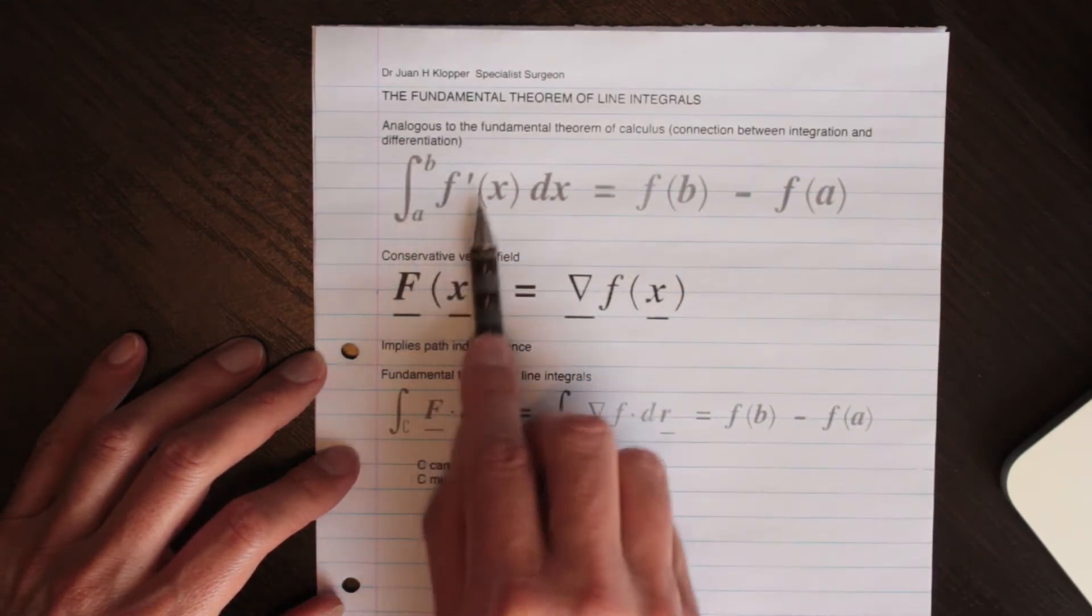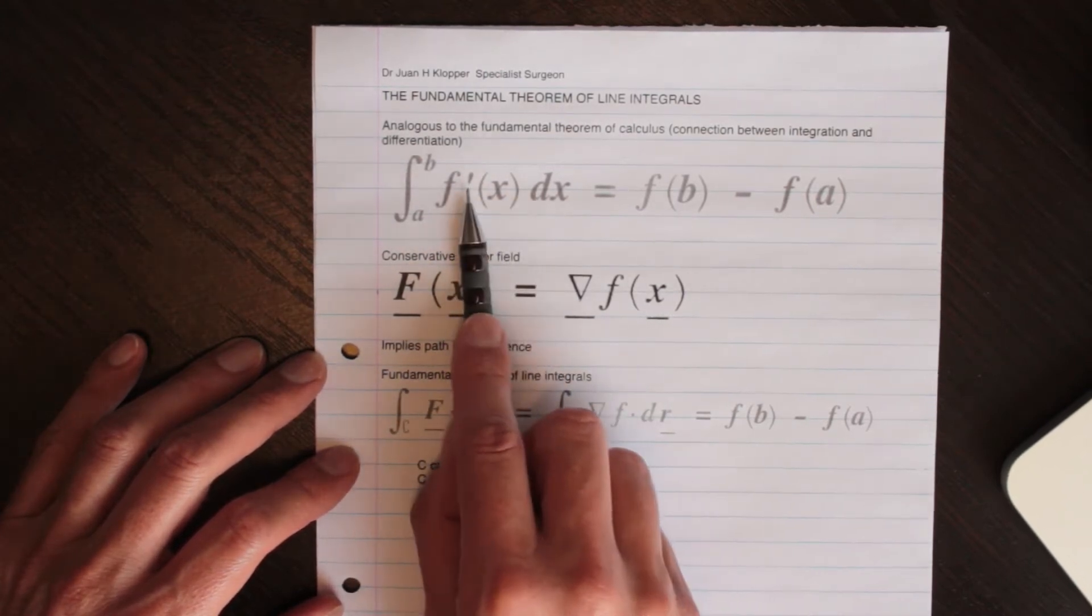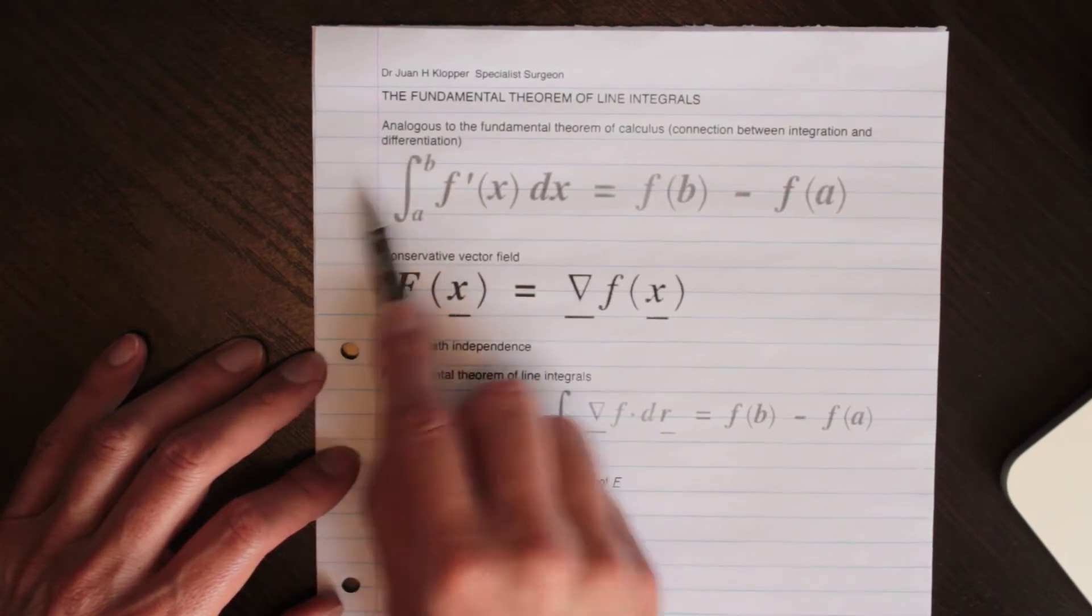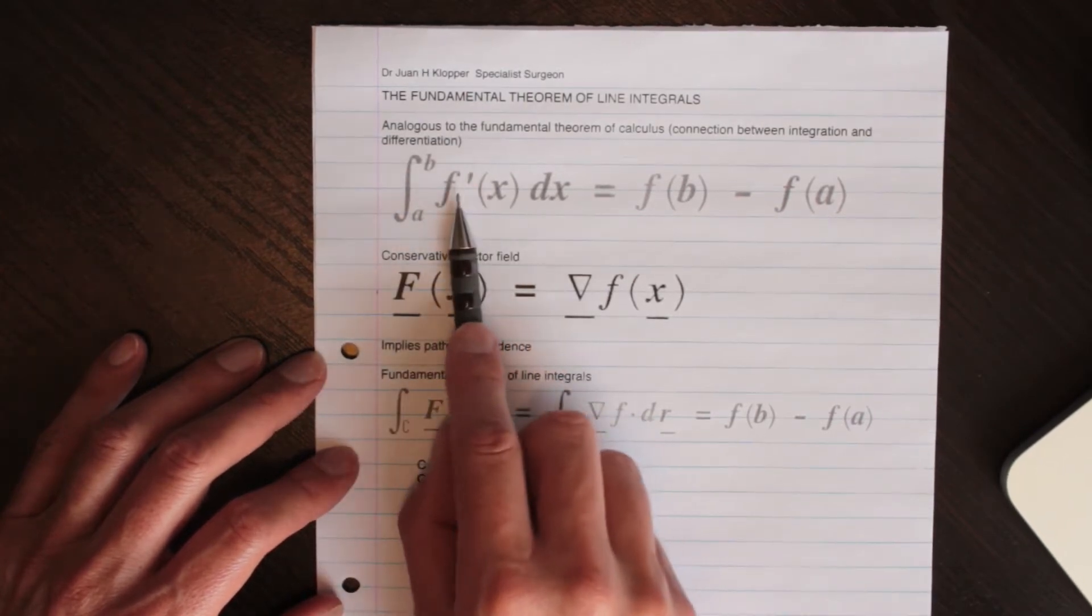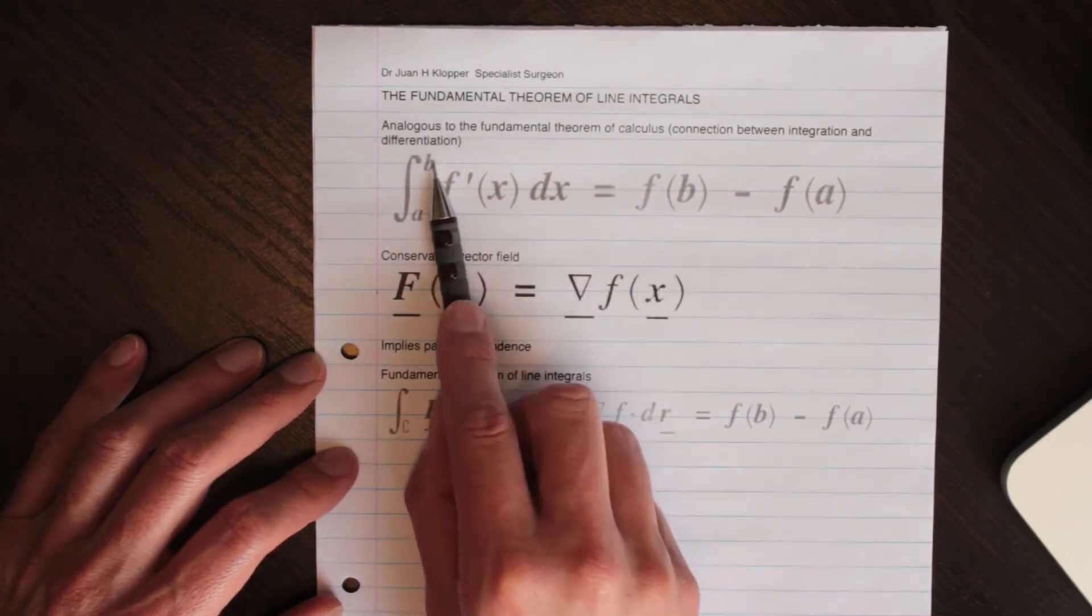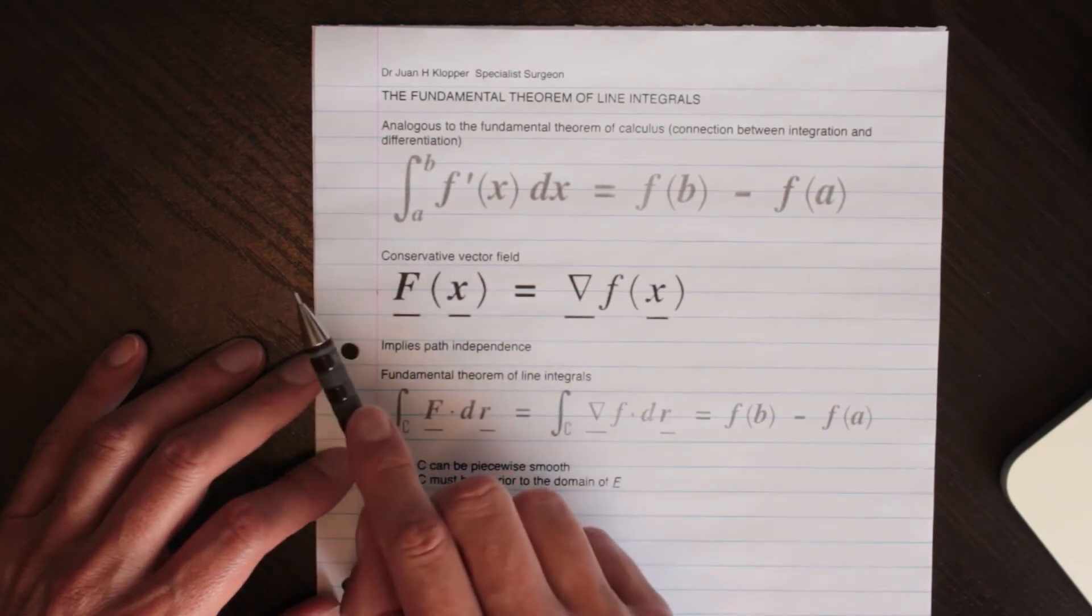Because if we took the definite integral of the derivative of a function, so I had a function I took its derivative, so there's the derivative, and I integrated, I'm back to the antiderivative, I'm back to the function, and I'm just subtracting that value at b minus that value at a, I'm just doing that subtraction.